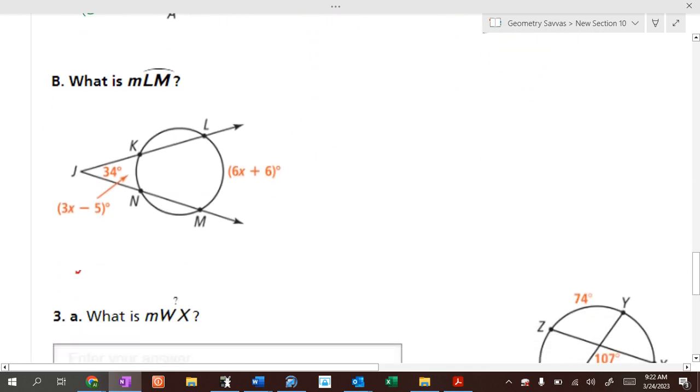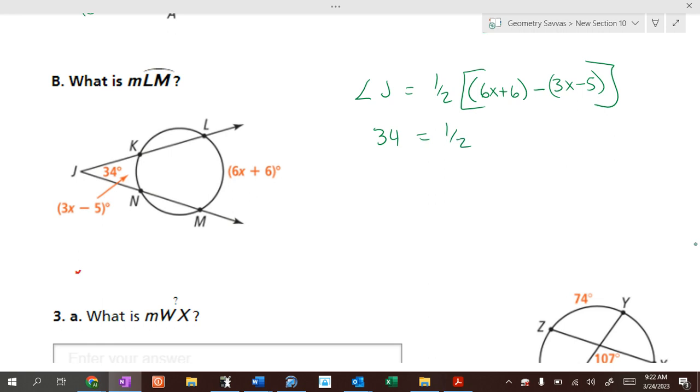Oh no, what do we have here? We have algebra. Angle J equals one half of 6x plus 6 minus 3x minus 5. We got to do some algebra there. So how big is angle J? 34, right? Equals one half of, what's 6x minus 3x? 3x. 6 minus a negative 5, minus a negative is plus a positive, so 6 plus 5 is 11.